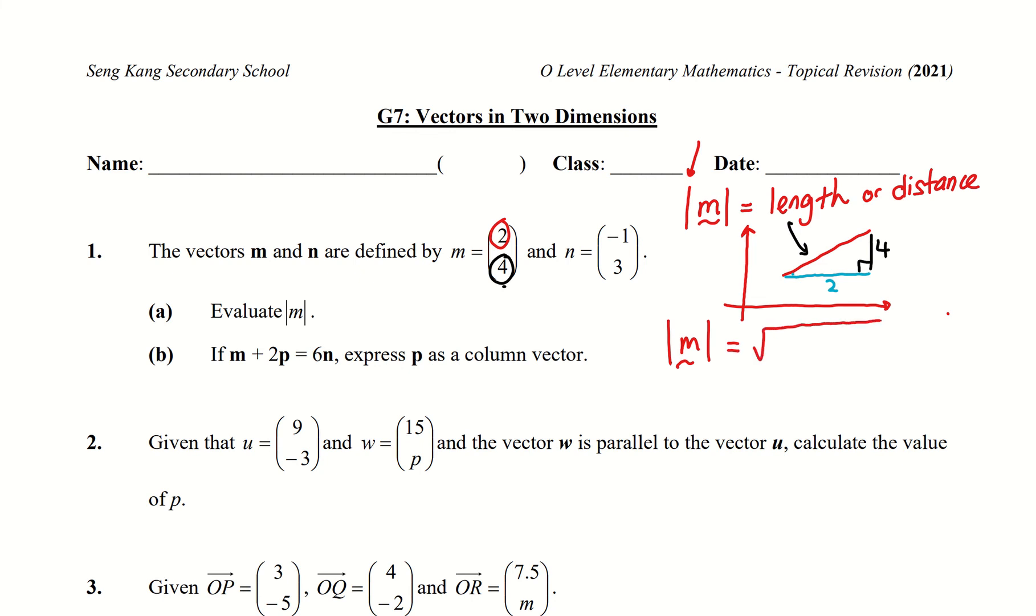Square root of a square plus b square. So if m is equal to a and b, then the magnitude is equal to square root of a square plus b square.